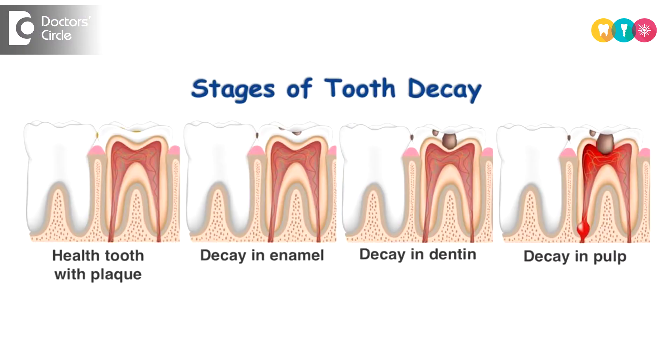The innermost layer which is responsible for all the sensations and which comprises of the blood vessels and the nerves is the pulp. So what happens when a tooth gets decayed? The bacteria adhere to the surface of the teeth, i.e. the enamel surface, and the destruction starts. If the cavity is not filled at this stage it progresses to the second layer, that is the dentine.